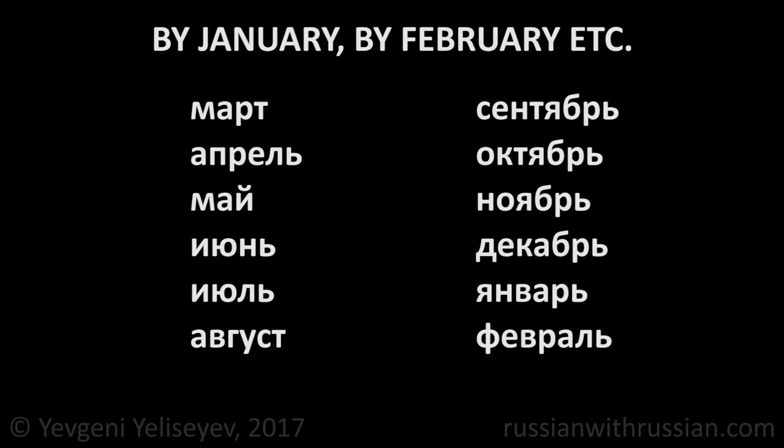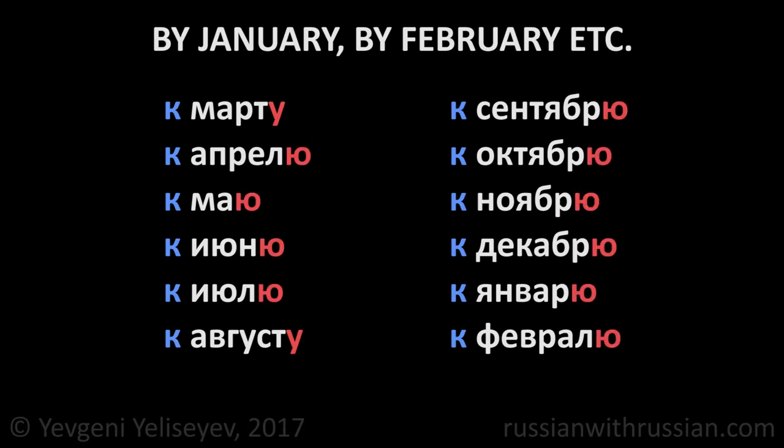To say "by January," "by February," and so on, we use the preposition К and put the name of the month in the dative case, adding the ending -у after hard consonants and the ending -ю instead of the short и and the soft sign.